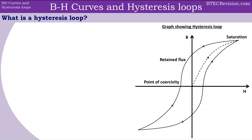Magnetic saturation is when increasing the magnetic field strength has no more effect, or negligible effect, on magnetic flux density. Next we can look at what a hysteresis loop is. Looking at the graph on the right side, we have extended our graph into the negative quadrants, and the negative regions just represent the opposite direction for these values.